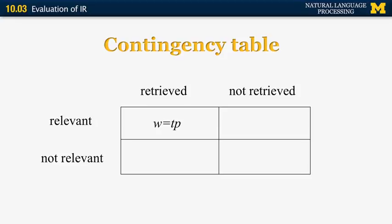W is the number of true positives — documents that were retrieved by the system and are also relevant to the user's query. Z, the number of true negatives, is the number of documents that were not retrieved by the system and were also not supposed to be retrieved, because they're not relevant. W and Z are good things; we want a system to have high values for both.